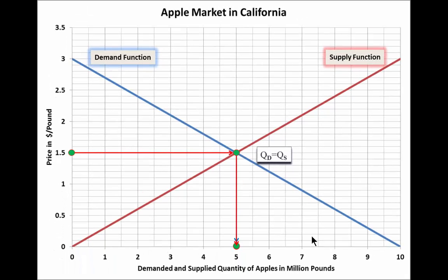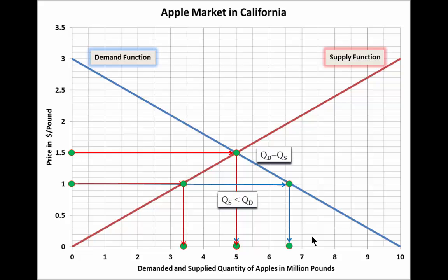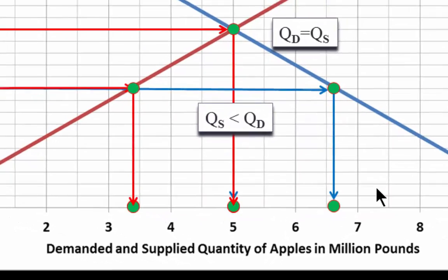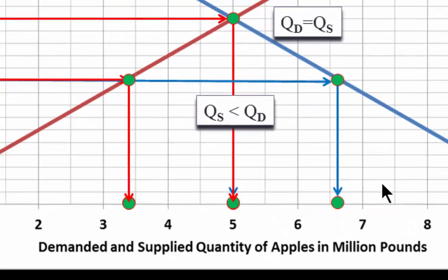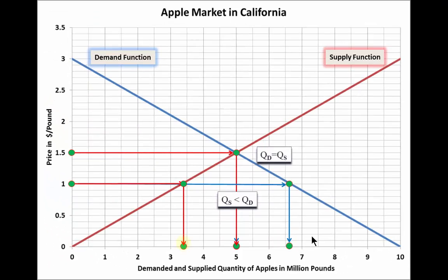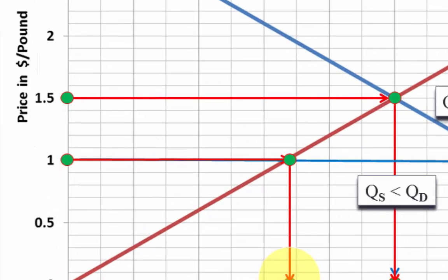What if the price is smaller than the equilibrium price of 1.50? For example, 1 dollar. We can see that the quantity demanded is now greater than the quantity supplied. Pause the video and find it out for yourself. What happens if more goods are wanted than are actually supplied? The price increases and thus moves towards the equilibrium price of 1.50.